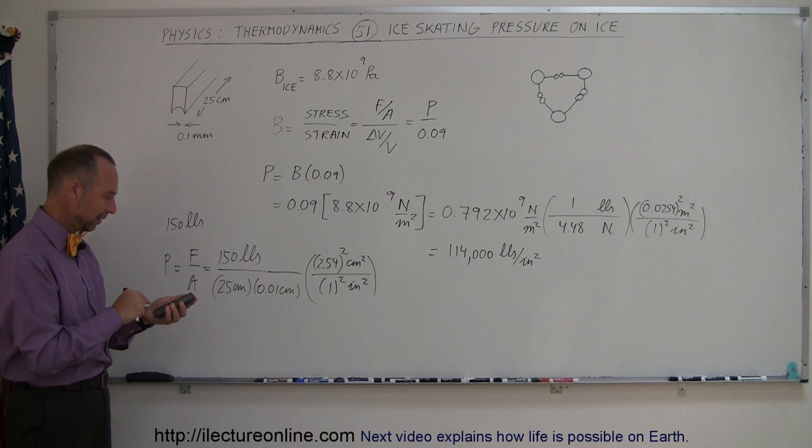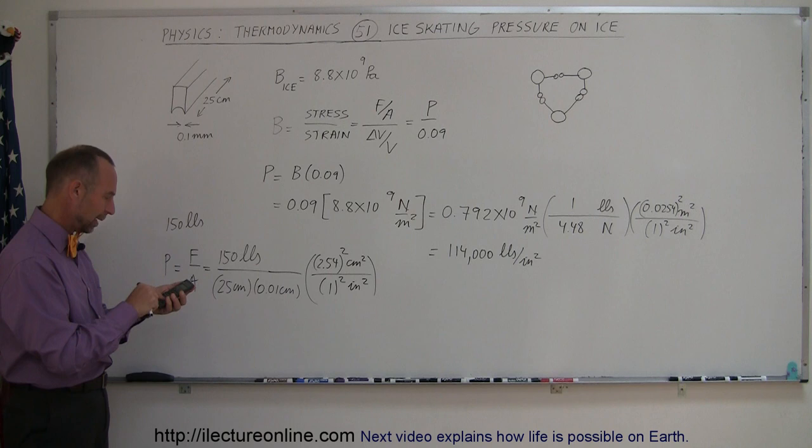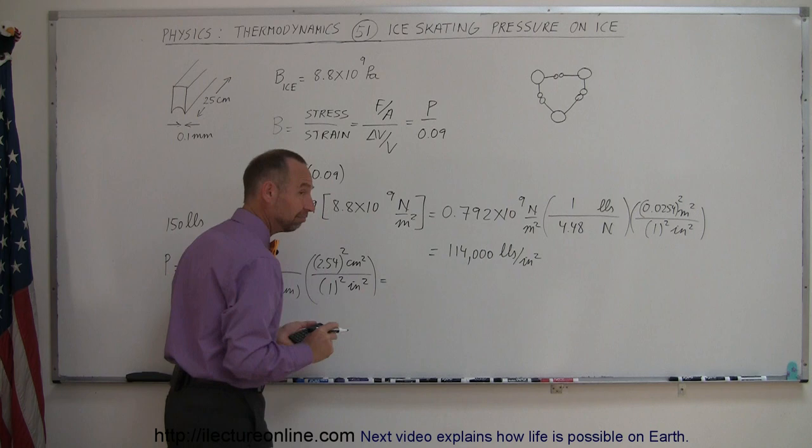We have 150 pounds divided by 25, divided by 0.01, multiplying times 2.54 squared equals—a person ice skating on a single blade of a single ice skate can produce a pressure of 3,870 pounds per square inch.